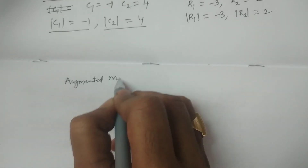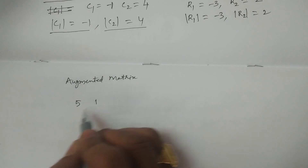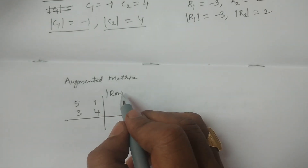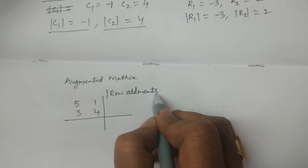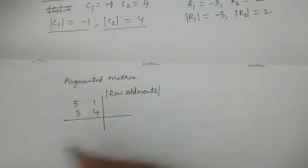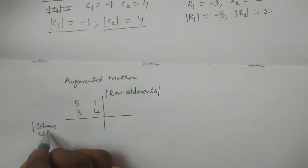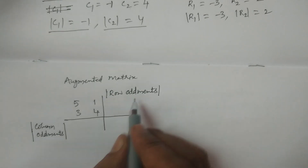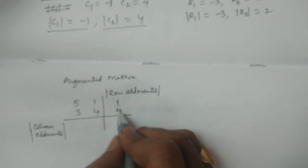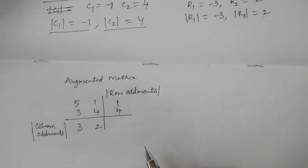This is the augmented matrix. The matrix elements are 5, 1, 3, 4. Row oddments: -1 and 4. Modulus: 1 and 4. Column oddments: -3 and 2. Modulus: 3 and 2. This is the complete augmented matrix used to determine the solution.